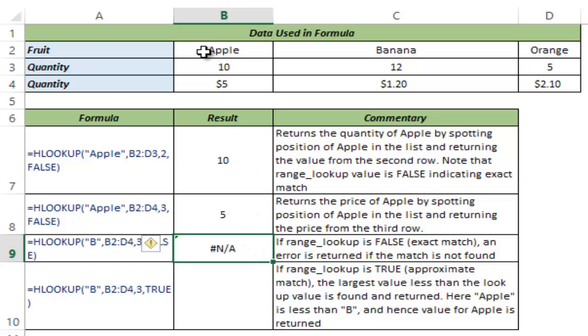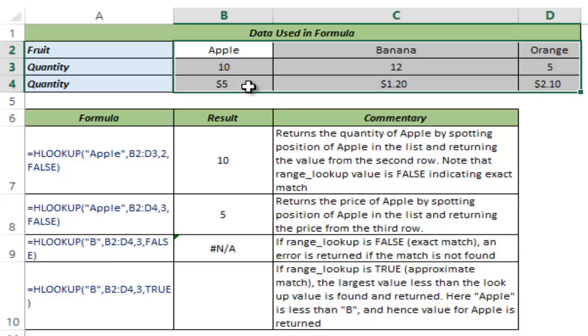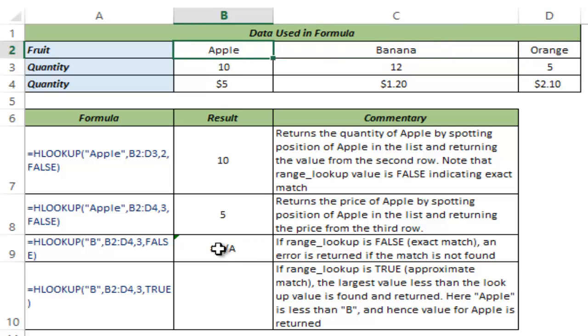The reason is that this array does not have the alphabet B. It has B here in banana but it's in a different word, it's just not that alphabet so that is why I have got an error here. If I change this to banana you can see I get 5 here which is from the third row. I will control Z to go back to this arrangement. So if you are looking for an exact match and Excel cannot find the lookup value it would return an error.